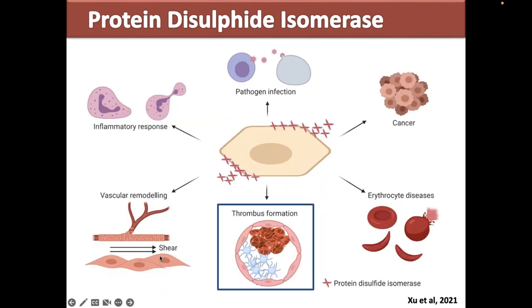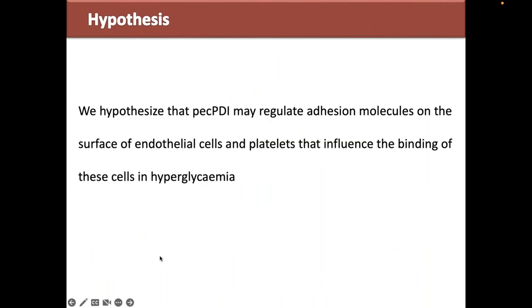This led us to hypothesize that extracellular PDI can regulate adhesion molecules on the surface of endothelial cells and platelets, which may ultimately influence the binding of these cells in hyperglycemia. Our experimental design involves HUVEC — some left in normal glucose media and others exposed to high glucose levels. A fraction of those are treated with PDI inhibitors or their respective controls.